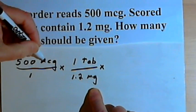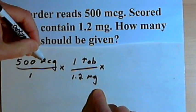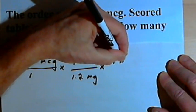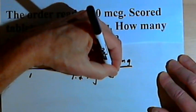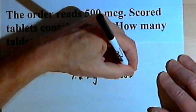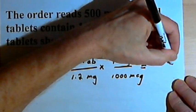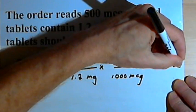Since I'm dealing with two different units, micrograms and milligrams, I'll have to have a conversion fraction, so I'll have 1 milligram over 1,000 micrograms, and my answer is going to be some number of tablets.